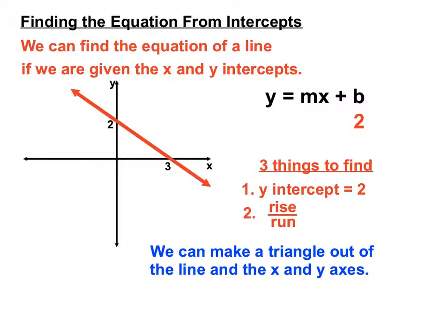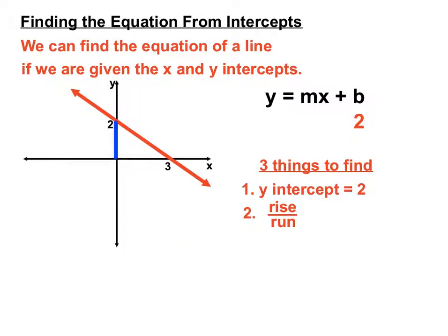We'll make a little right angle triangle there, and that'll help us find the rise and the run. So that left-hand side of the triangle I've made blue there—you can see that would be a rise of 2, because we have 2 from the origin up to that y-intercept of 2.